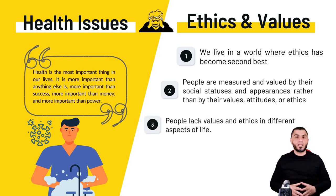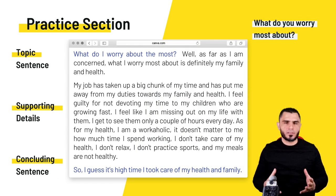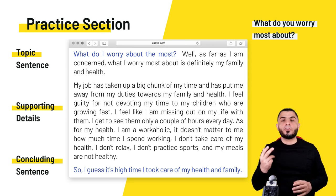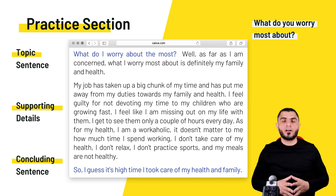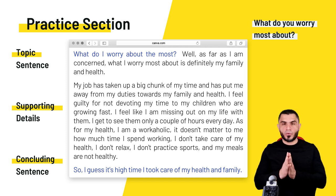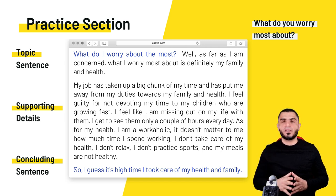Now, after elaborating on these life issues, let me ask you a question: What do you worry most about? Your health, your financial situation, your future career, your values, or environmental problems? Write your answer in the comment section below in a coherent way. Your answer should include an introductory sentence, supporting details, and a concluding sentence.